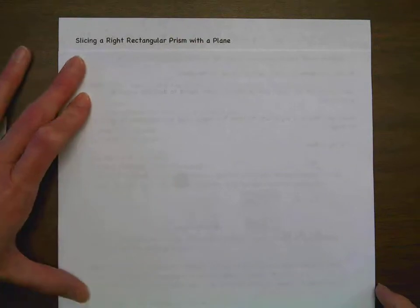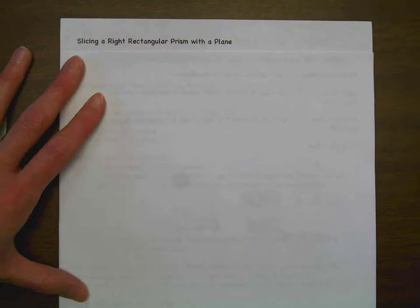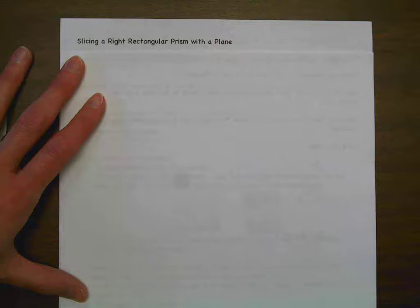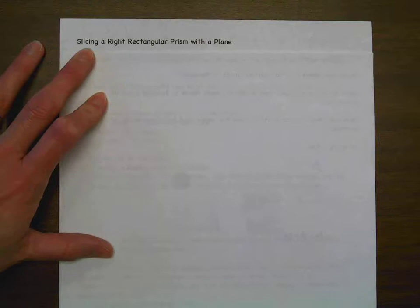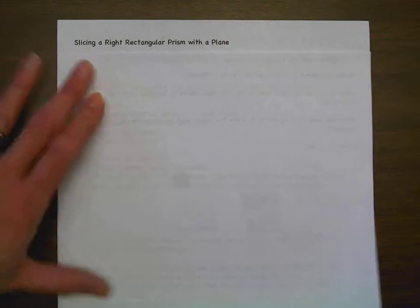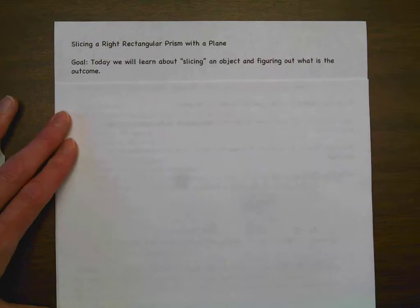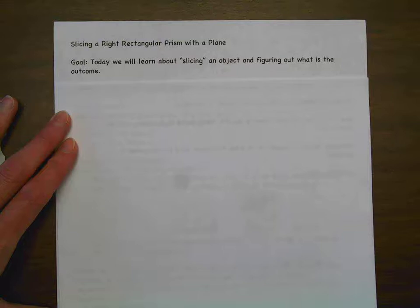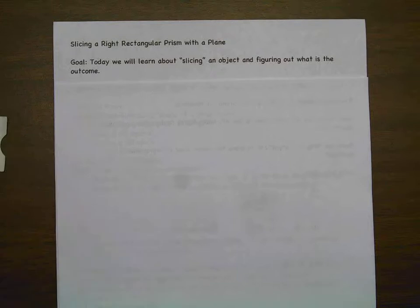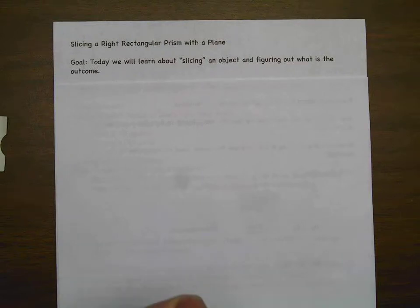Basically, what I want you to start visualizing is that a right rectangular prism is like a Kleenex box or a stick of butter. Now you have to envision that we are going to be cutting that shape — slicing means you are actually cutting into it. Today we will learn about slicing an object and figuring out what the outcome is. We are going to take a three-dimensional figure, slice it, and your job is to look at what shape is created by the slice.